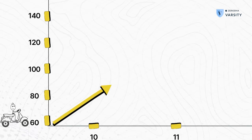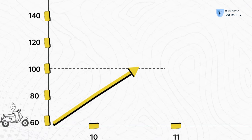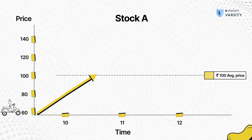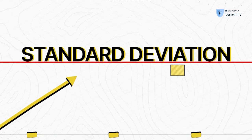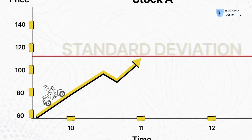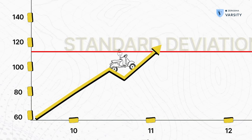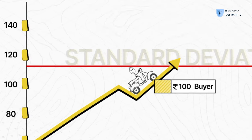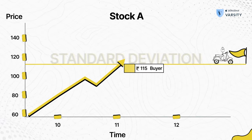A trader is someone who designs a trade. For example, consider that a stock is trading at Rs.100. You identify that Rs.100 is the mean price or average price of the stock, and the first standard deviation of the stock is Rs.115. You also expect the stock price to go higher to the extent of the first standard deviation. Therefore, you would be a buyer in the stock at Rs.100 hoping that the stock price will reach Rs.115. Here you've designed a trade with a certain logic based on which you've taken it up.